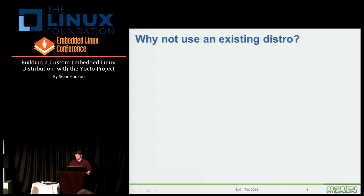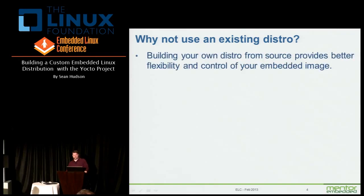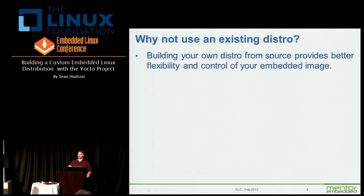I get this question fairly frequently: why not just use an existing distribution? You can use Debian, you can use Fedora. These are certainly valid choices, but you're losing a lot in terms of flexibility. You're very dependent on what's going on upstream, and dependent on the cadence of releases and developers outside of your control. Building from source is going to give you a lot more flexibility and control of your embedded image, regardless of whether or not you're using a reference distribution like Angstrom or Poky.